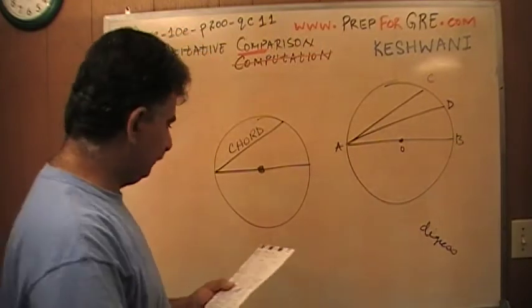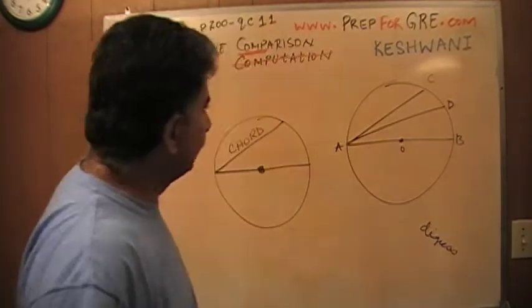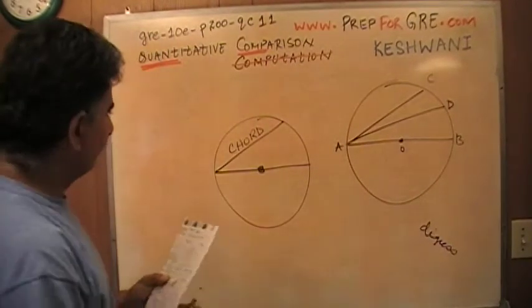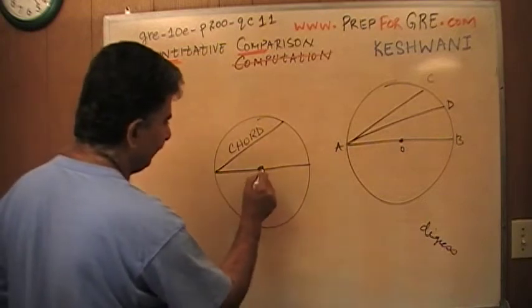They basically want you to compare. I'm going to erase this now. So we have a chord AC and a chord AD. This is a chord. This is the diameter obviously because it goes through the center.